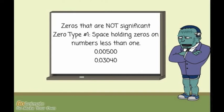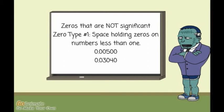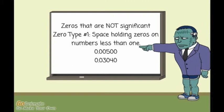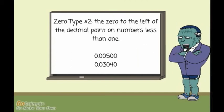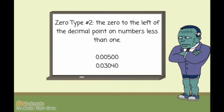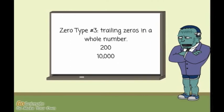Finally, you will look at zeros that are not significant. Space-holding zeros to the right of the decimal on numbers less than one are not significant — the two zeros to the left of the five and the one zero to the left of the three are not significant. The zero to the left of the decimal point on numbers less than one are not significant; the first zero in each number is not significant — it is a placeholder. Zero type number three: trailing zeros in a whole number are not significant.